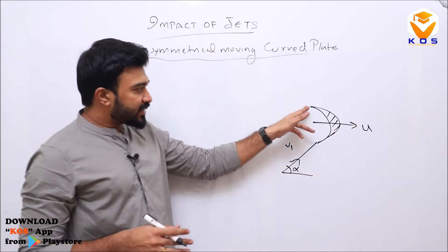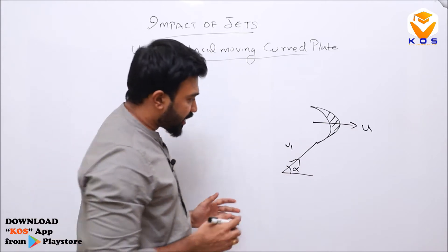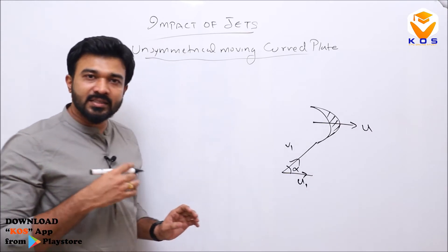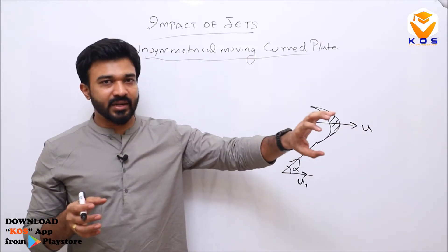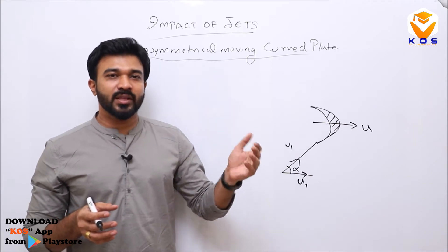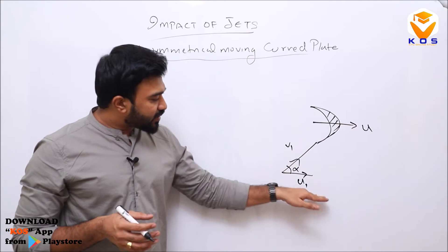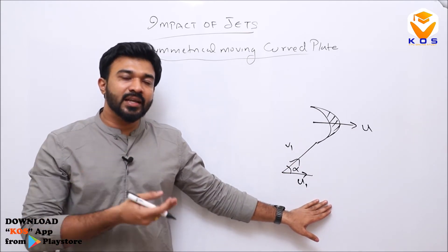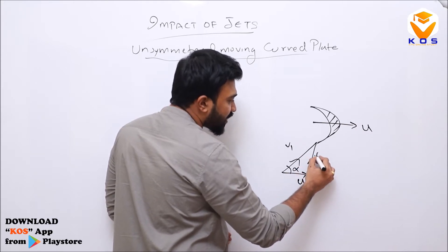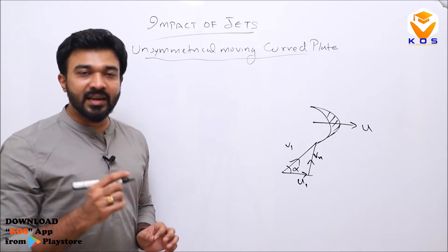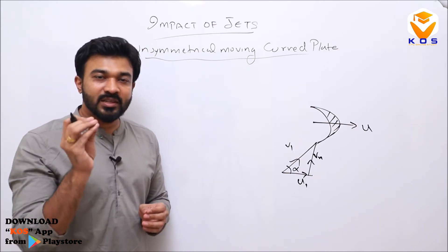The blade moves in the horizontal direction. At the inlet side, the blade speed is U1. In the previous cases, we had relative velocity V−U because both were in the same direction. Here, we construct the velocity triangle: the relative velocity Vr1 at inlet is obtained from the vector V1 minus U1, giving the third side of the triangle.